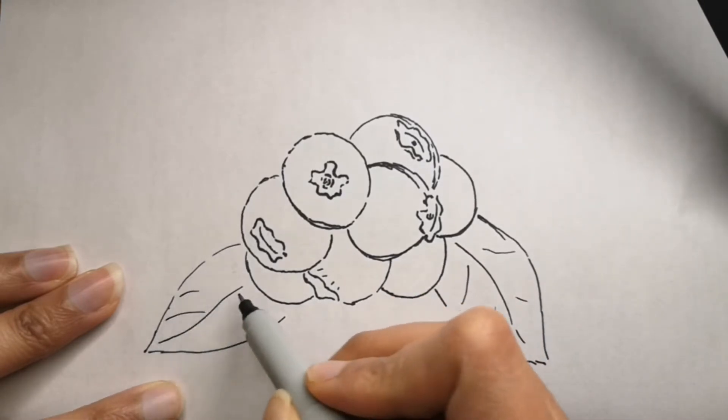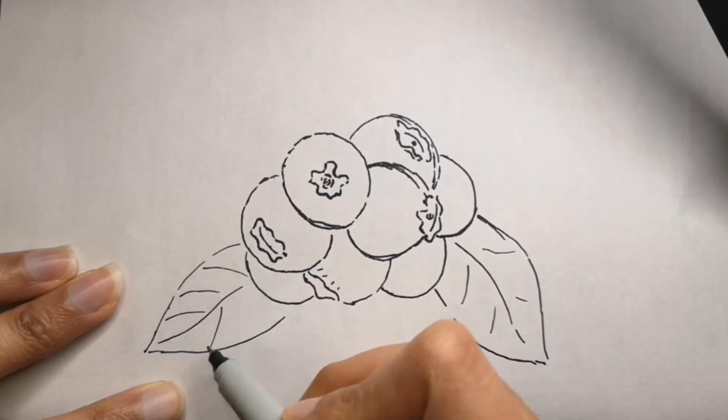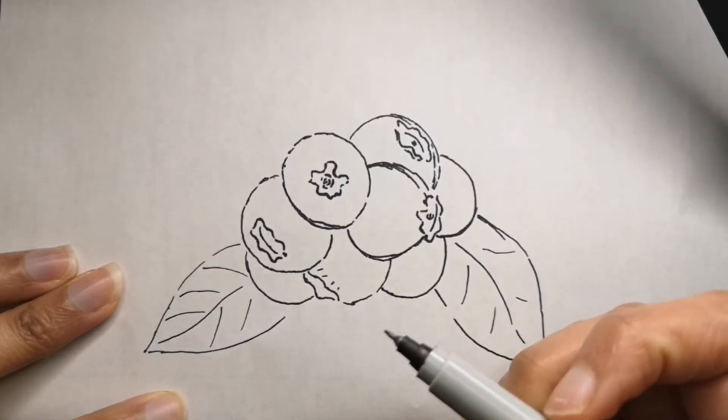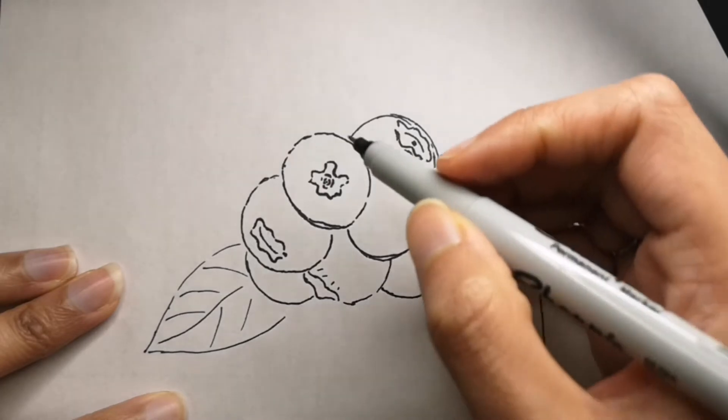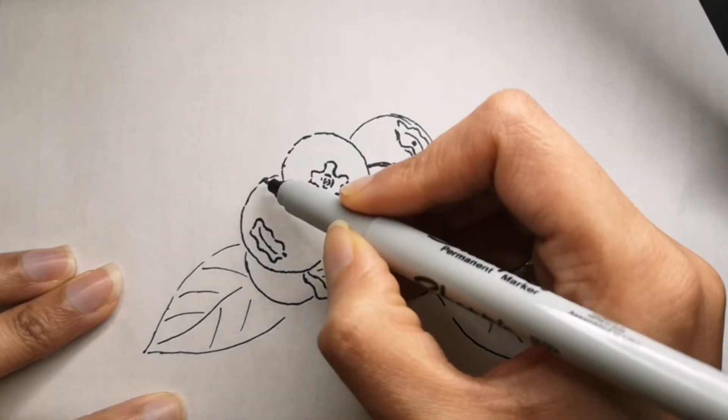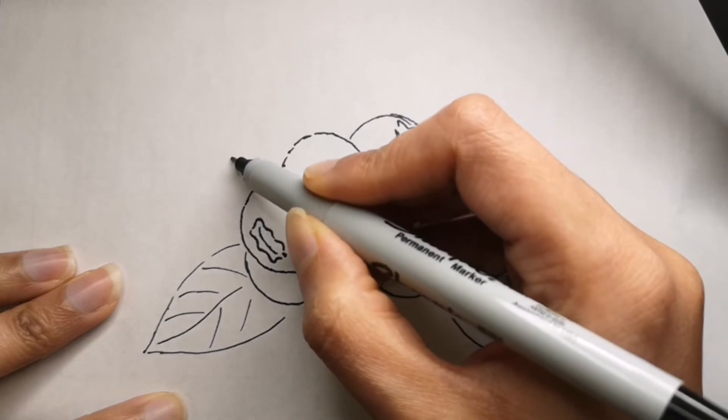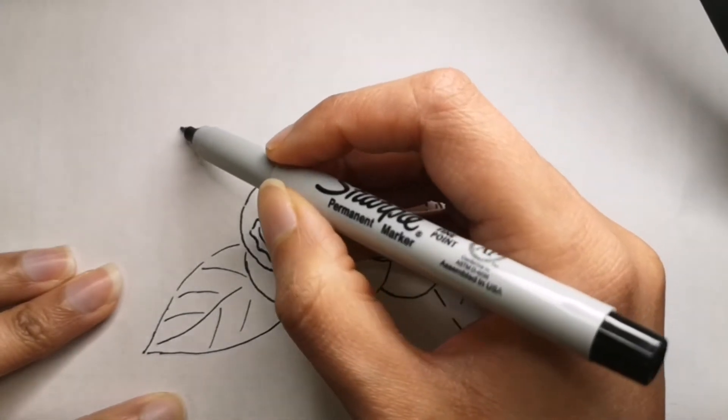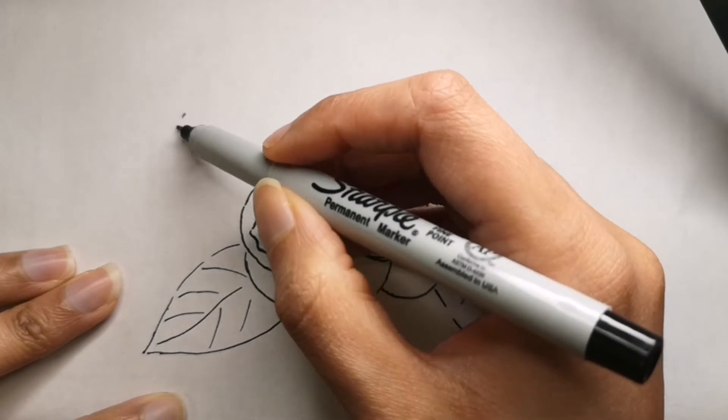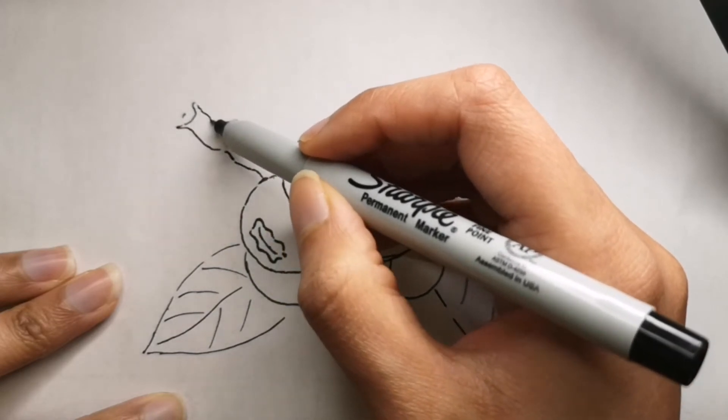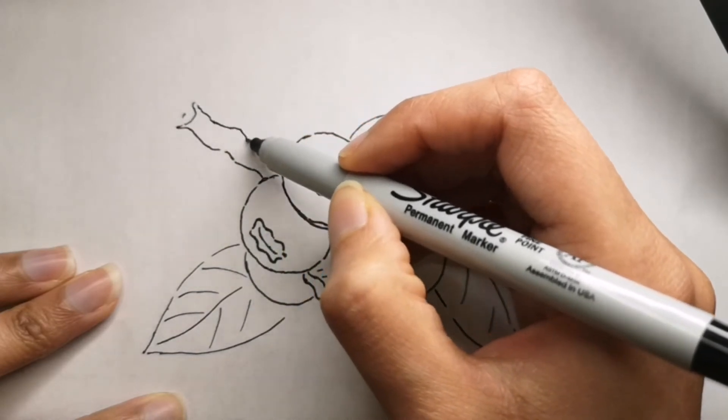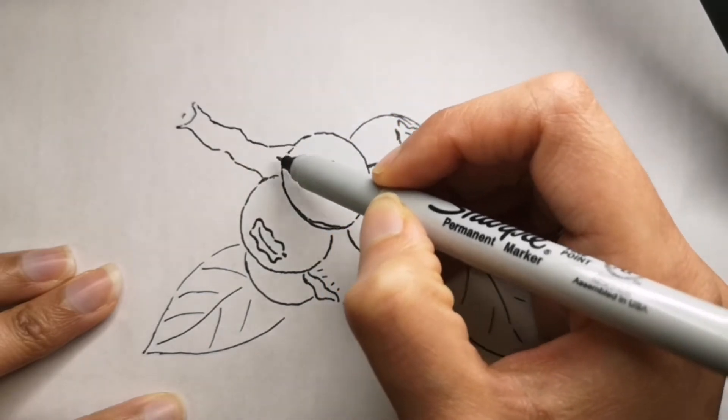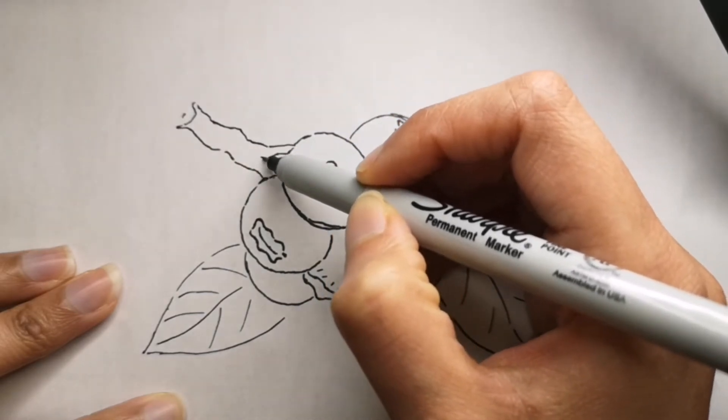British Columbia is the largest highbush blueberry growing region in the world. As a country, Canada ranks third behind the US and Chile. Blueberries are Canada's most exported fruit. So there you go, if you are Canadian you are lucky that you can eat as many blueberries as you can.